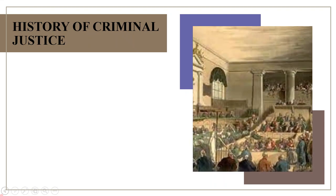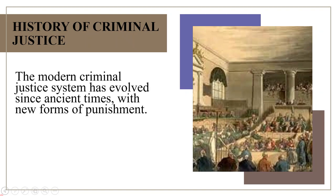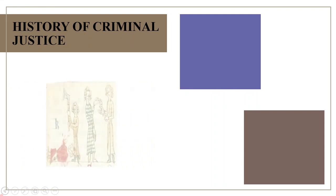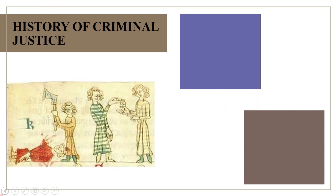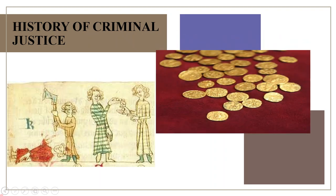Here is the history of criminal justice. The modern criminal justice system has evolved since ancient times with new forms of punishment. In ancient times through the middle ages, exile was a common form of punishment. During the middle ages, payment to the victim or the victim's family, known as verguild, was another common punishment including for violent crimes. For those who could not afford to buy their way out of punishment, harsh penalties included various forms of corporal punishment such as mutilation, branding and flogging, as well as execution.